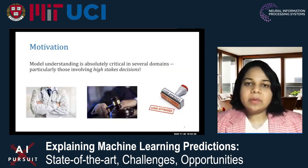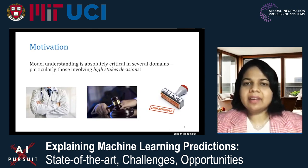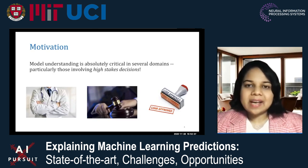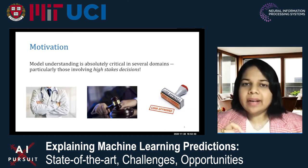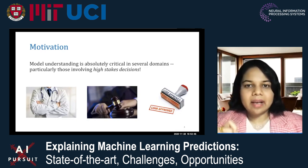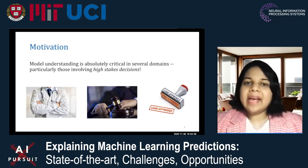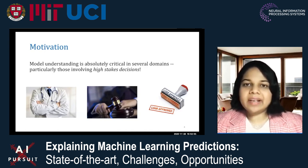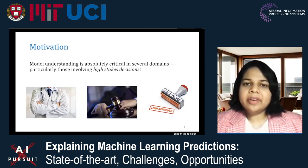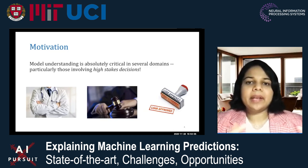The next big question is: in which of these settings is model understanding really crucial? Model understanding can be absolutely critical, particularly in those domains and applications which involve high-stakes decisions that impact the lives of millions of individuals. Examples of such domains include healthcare, medicine, criminal justice, financial lending, and many more. Now let's probe a little bit deeper to really understand what exactly model understanding can help enable. To do this, let's consider some concrete examples.